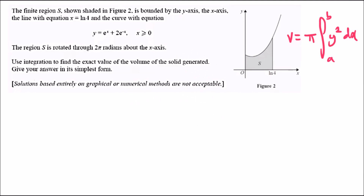Welcome back. Here we're going to figure out the volume of integration for this particular problem. The question tells us that the finite region S — the shaded region — is bounded by the y-axis, the x-axis, the line x = ln(4), and the curve given by the equation e^x + 2e^(-x).